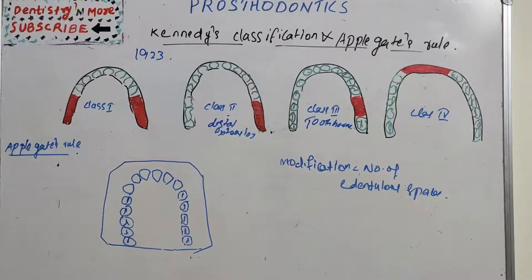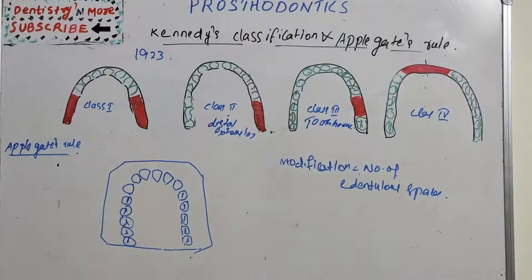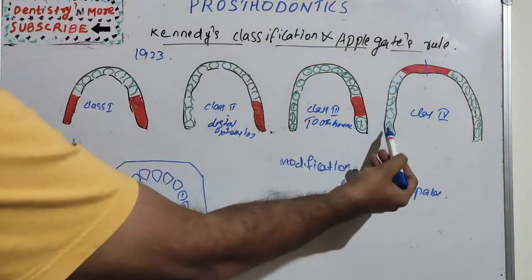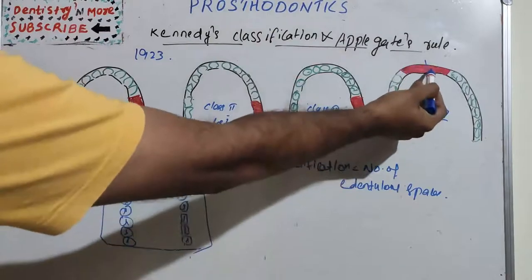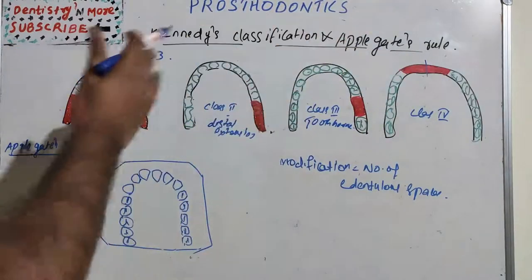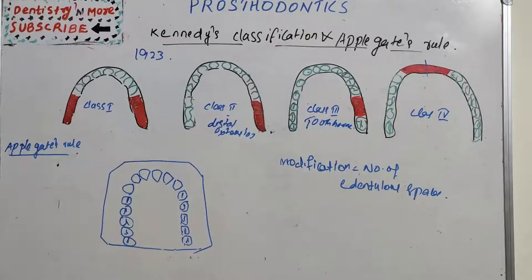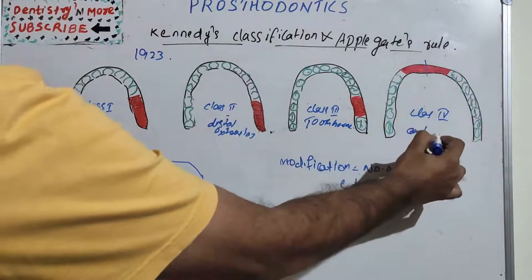Class 4 is a single but bilateral edentulous area crossing the midline, with the edentulous area anterior to the remaining natural teeth. The remaining natural teeth are on the posterior side, so this anterior bilateral area crossing the midline is also known as anterior extension.